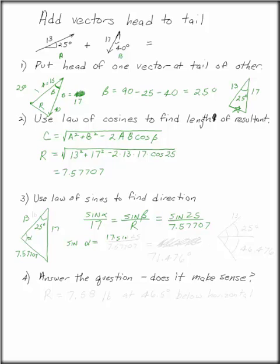Alpha, or sine alpha rather, is 17 times sine 25 over 7.57707. That gives you 46.476 degrees. That gives you 71.476 degrees.